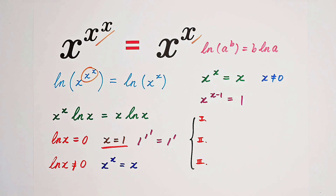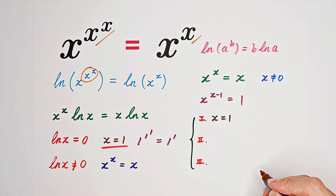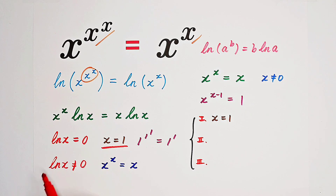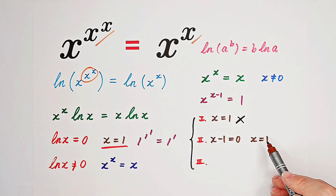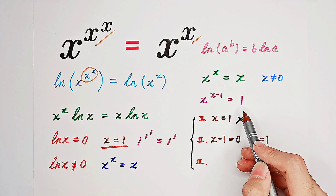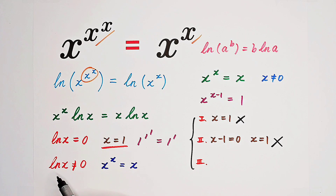We actually have three cases here. Firstly, x equals one: one to the power of any number equals one. However, we cannot accept x equals one, because then natural log of x equals zero, which does not correspond to our case — so we abandon x equals one. The second case: x minus one equals zero, giving x equals one again, since any non-zero real number to the power of zero is one. But again, x equals one cannot be accepted for the same reason — natural log of one is zero, which does not correspond to this case.